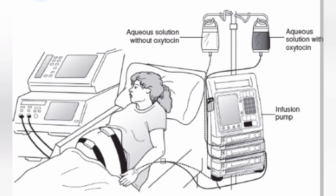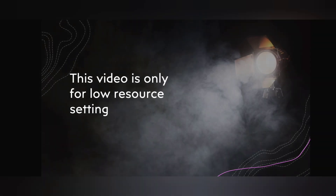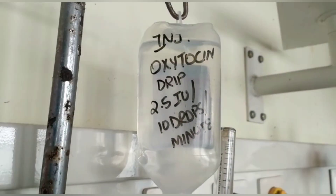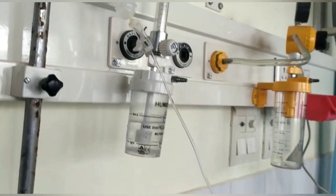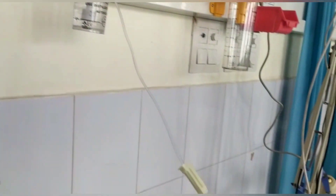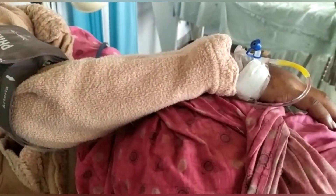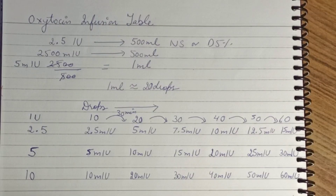In a good resource setting, you require an oxytocin infusion pump and a CTG machine for maternal and fetal monitoring. However, this video is only for low resource settings where you have only a D5 or NS bottle in which you put oxytocin and set a drop rate directly connected to the patient, with manual monitoring of maternal and fetal parameters.